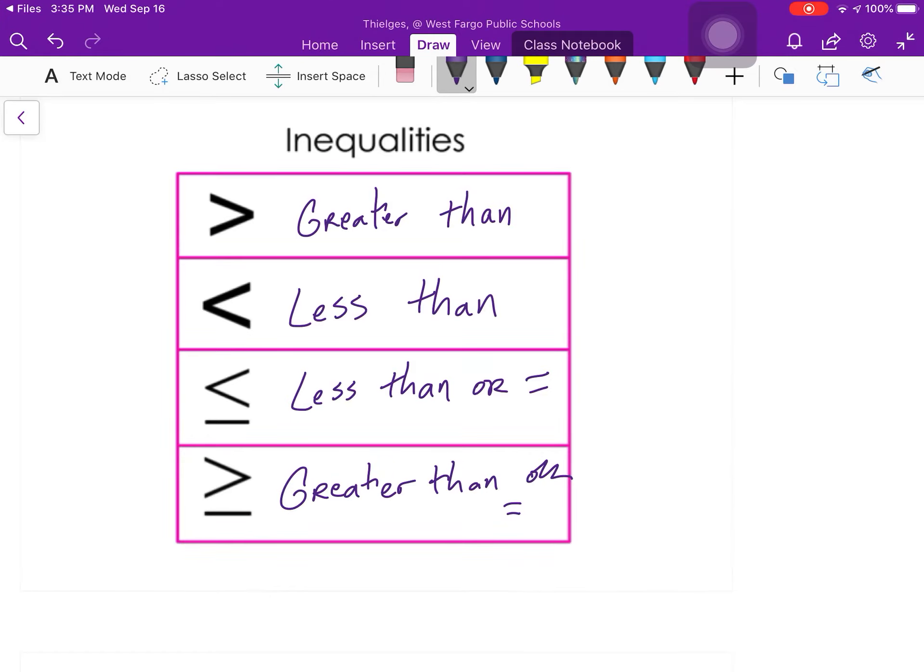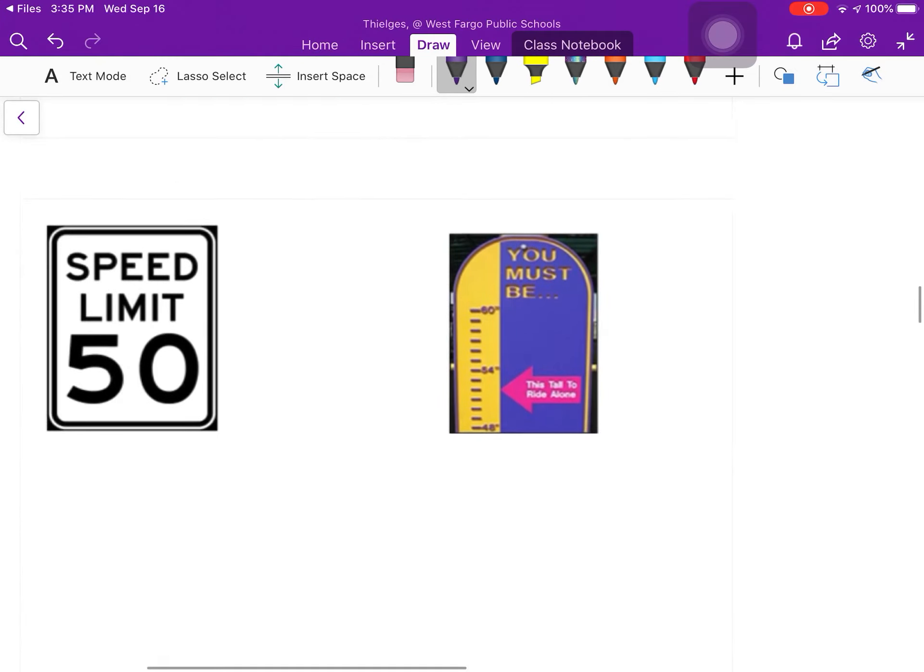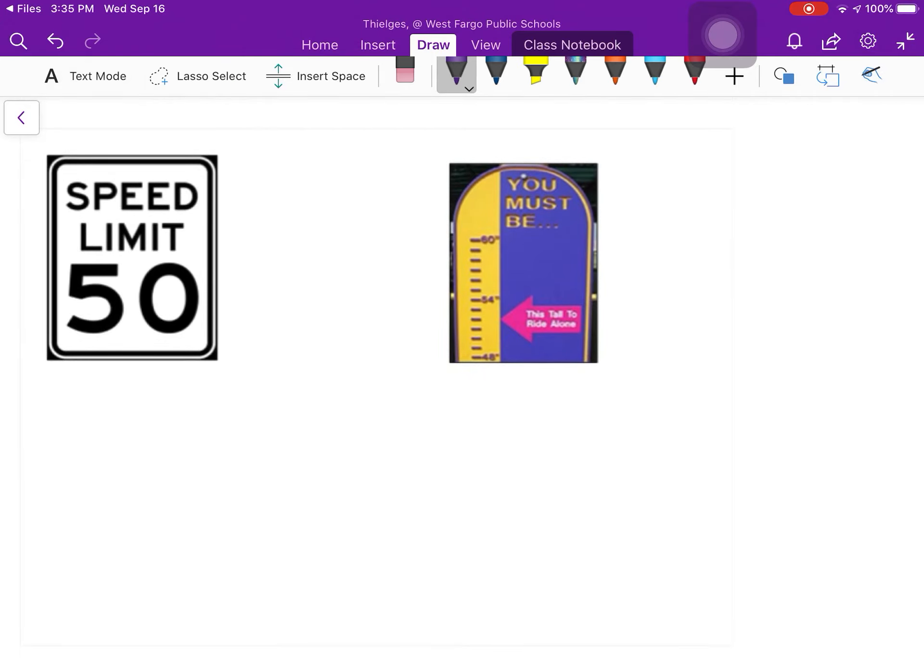Like for example we've got speed limit, the speed limit is 50 miles per hour, but that doesn't necessarily mean that you are going to go just 50 miles per hour. So that maybe as an inequality would be the speed has to be less than 50. Same thing for a ride, the too tall sign looks like it's about 52 inches, so it would be that your height has to be greater than 52 inches. So life's got all sorts of different inequalities.